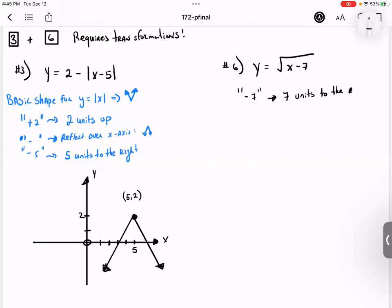Now, does anybody know what's the basic shape for y equals the absolute value of x? Anybody know what that basic shape looks like? Yeah, it sort of looks like a curved arrow, sort of like half a parabola. I call it the fishing rod.